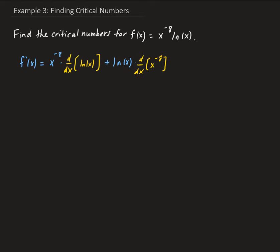Now we're going to take the derivatives of those components. We get x to the minus eight times one over x — since the derivative of natural log x is one over x — so that gives one over x, plus natural log of x times minus eight times x to the negative nine, just applying the power rule.